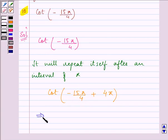Now the multiple of pi which is greater than minus 15 pi by 4 will be 4 pi. And the value will come out to be cot pi by 4.